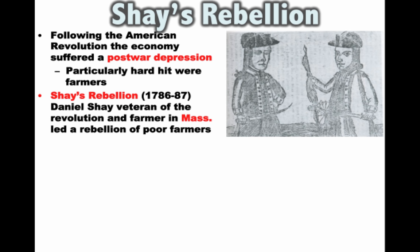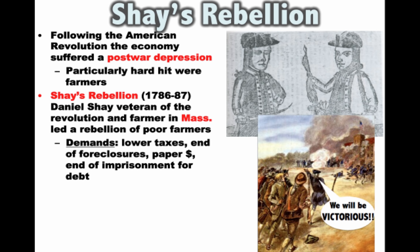Daniel Shays, the man the rebellion is named after, was a veteran of the American Revolution and a farmer in Massachusetts. He led a rebellion of poor farmers in the state of Massachusetts. Many of these farmers were seeing their farms foreclosed — taken over by the bank. They had demands: they wanted lower taxes, an end to foreclosures, the printing of paper money to help pay off debts, and an end to imprisonment for debt — you could actually go to jail if you didn't pay your bills back then.